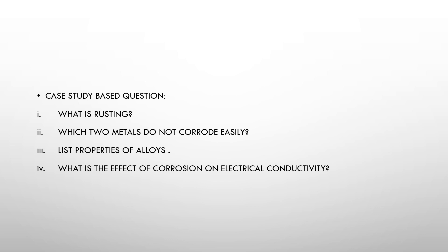Next question: what is the name given to the corrosion of iron? The name given to the corrosion of iron is rusting. They also asked: what is the formula of the green color coating on copper? The formula of the green color coating on copper is CuO — that is copper oxide.